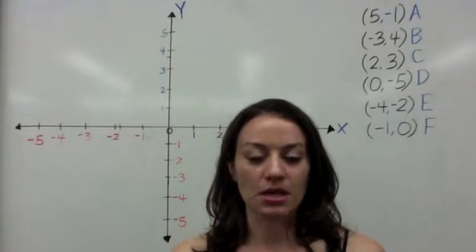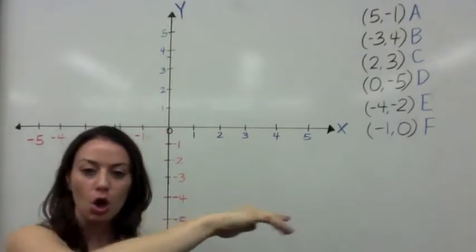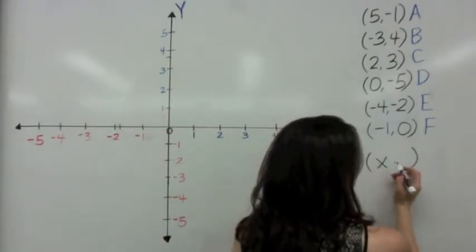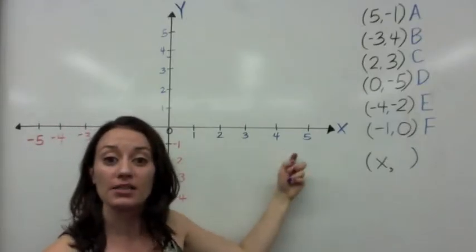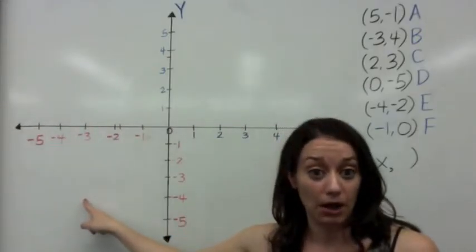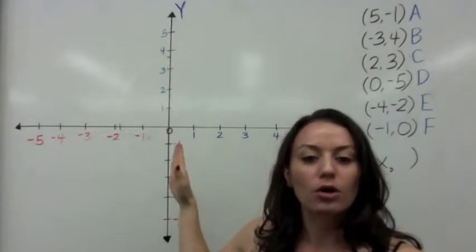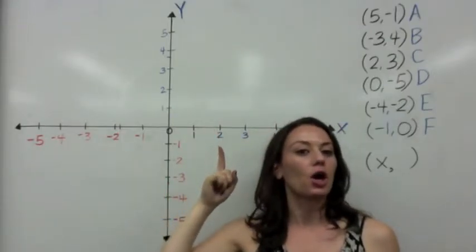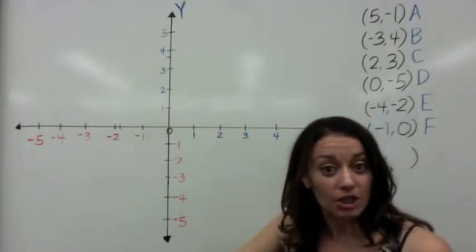Coordinate points are also known as ordered pairs — because when you go to graph a point, there is an order that you have to follow. You always start on the x-axis first. That's why in ordered pairs, you always start with x first, with a comma between the two values. If x is positive, you're going to start on the right. If x is negative, you're going to start on the left. From there, you go on the y-axis. If y is positive, you go up. If y is negative, you go down.